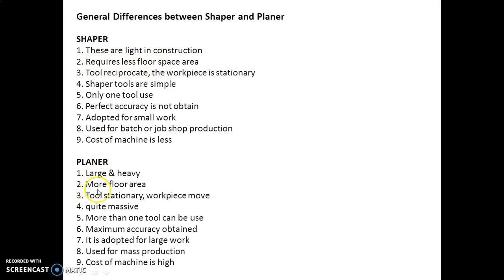In shaper, tool reciprocates and workpiece is stationary, but in case of planer it is opposite - tool is stationary and workpiece is movable.